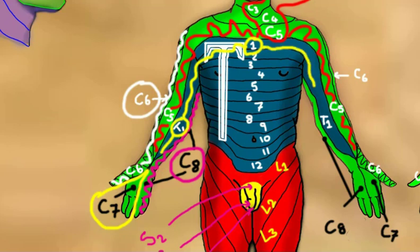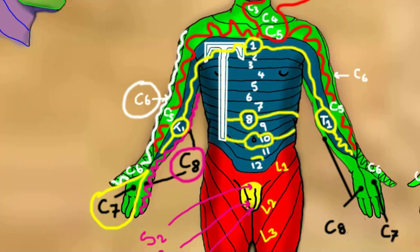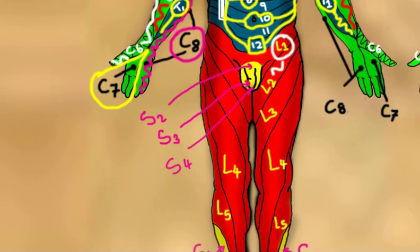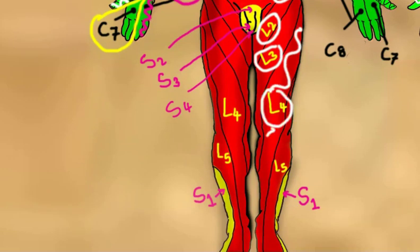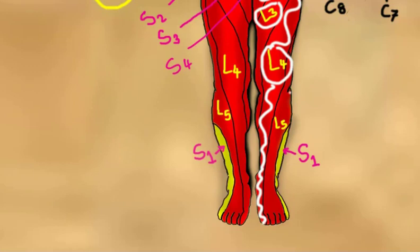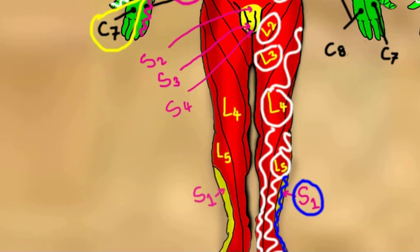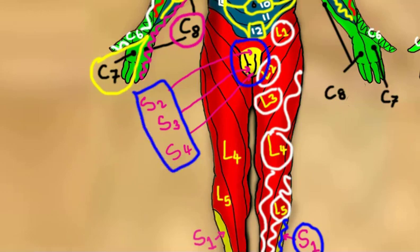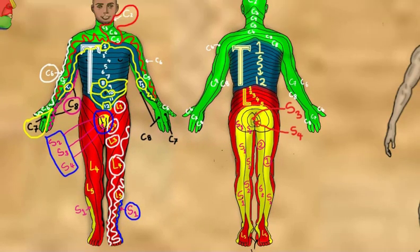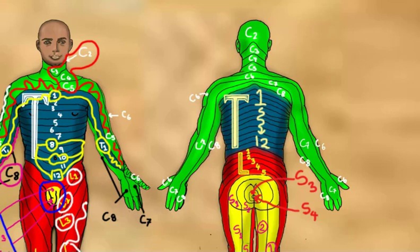T1 also supplies part of the inner arm. T8 is at the level of the xiphoid process. T10 is at the level of the umbilicus, and T12 is at the level of the symphysis pubis. The groin, anterior thigh, and most of the foot are supplied by the lumbar nerves from L1 to L5. S1 supplies the lateral aspect of the foot and the little toe, while the other sacral nerves supply the genitosacral area.